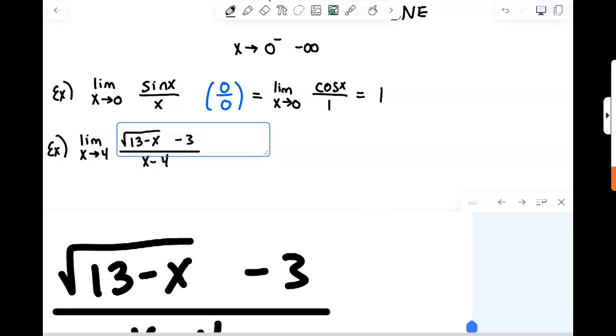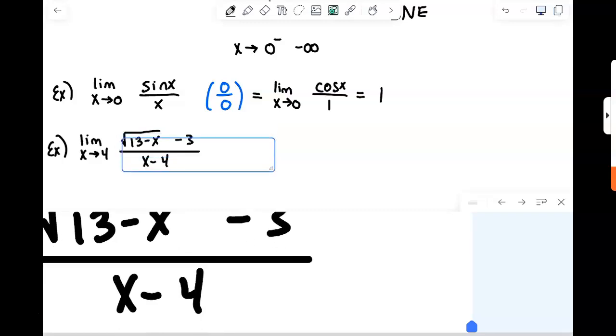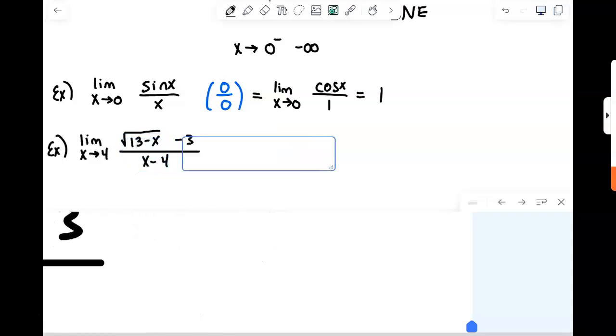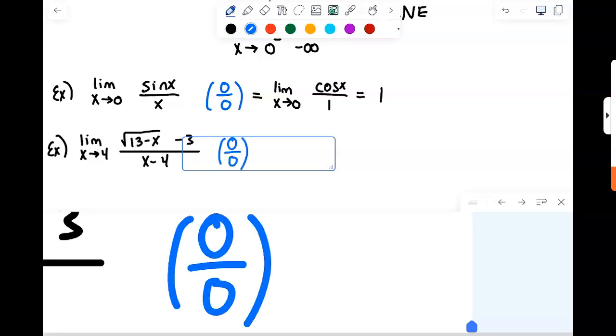So very quickly, if you plug 4 into the top, that would be 13 minus 4 would be 9, square root of 9 is 3, 3 minus 3 is 0. 4 minus 4, of course, is 0. So we are again dealing with a 0 over 0 limit.